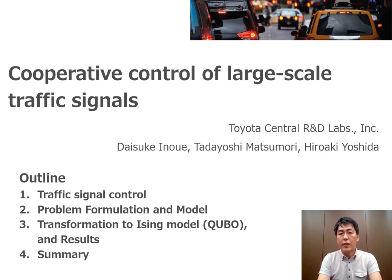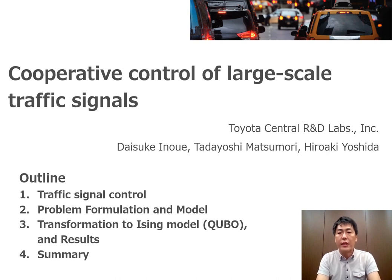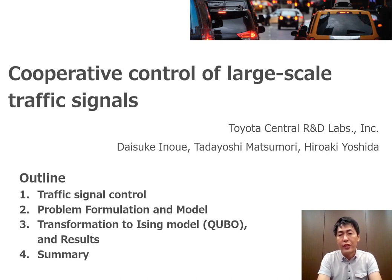Two years ago, we started exploring the applications of quantum annealing machines in mobility services, and the topic I'm going to talk about is one of our first results. The key point in this study is how we have modeled the traffic flow to be compatible with the Ising model or QUBO model to implement with the D-Wave machine. But before jumping into the traffic signal problem, I'm going to mention the background of our research.